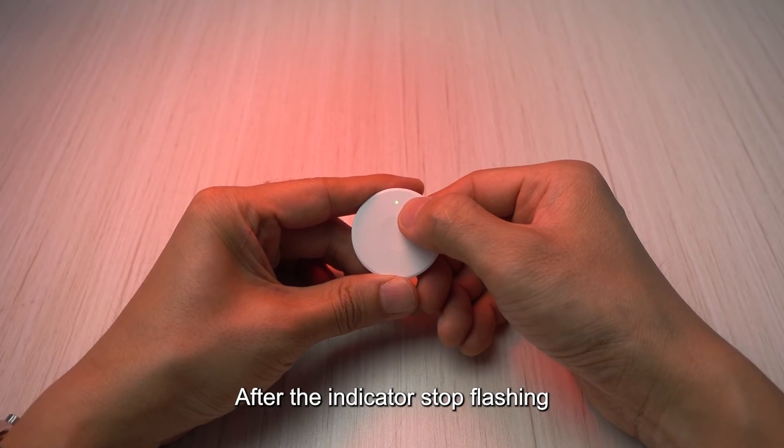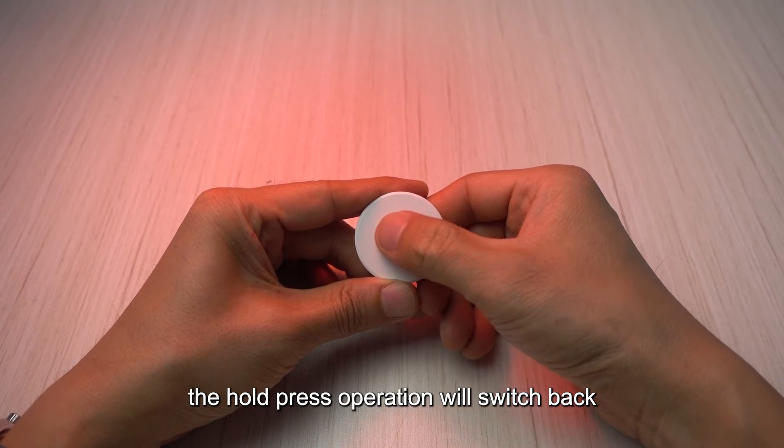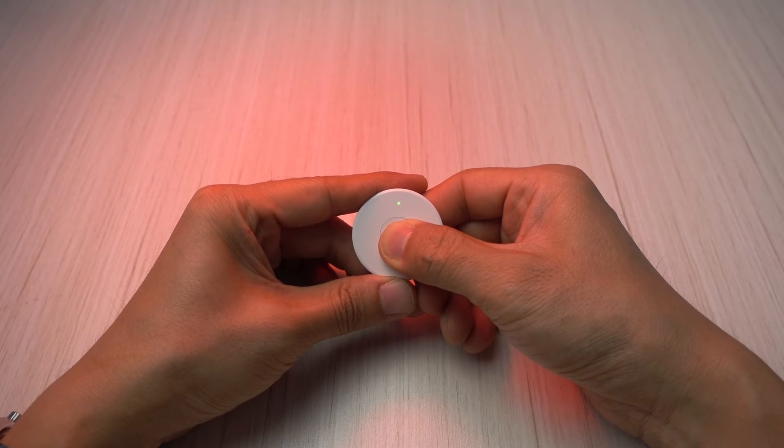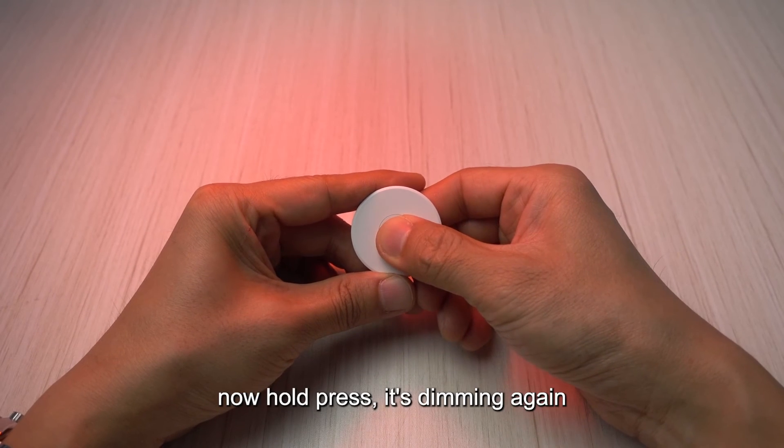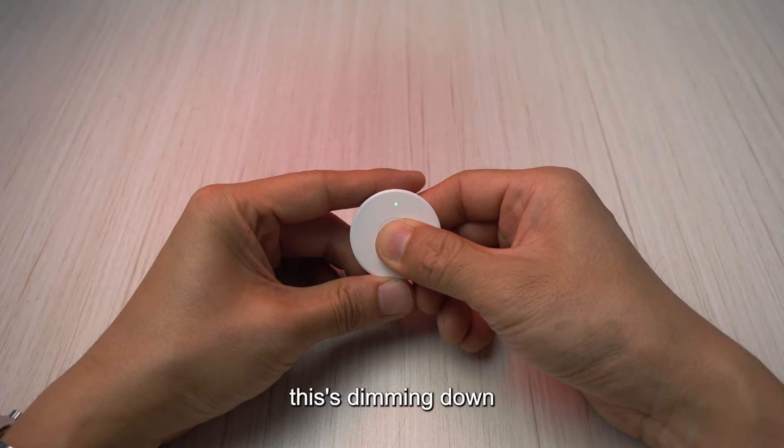So after the indicator stops flashing the hold press operation will switch back to dimming function. Now hold press is dimming again and dimming down.